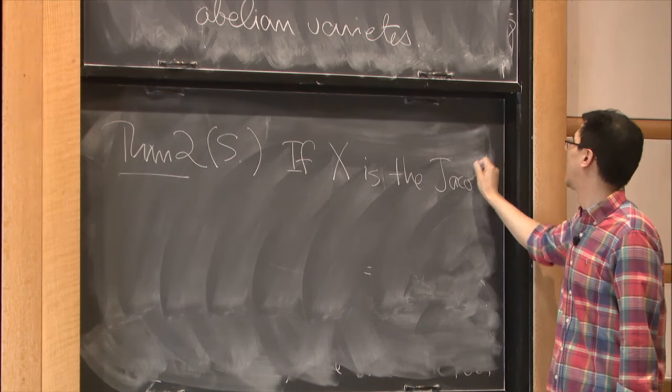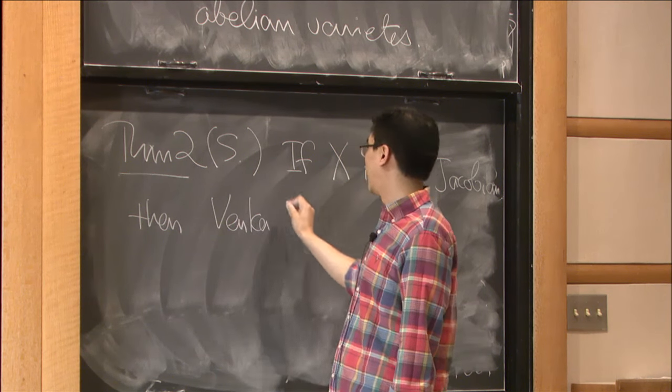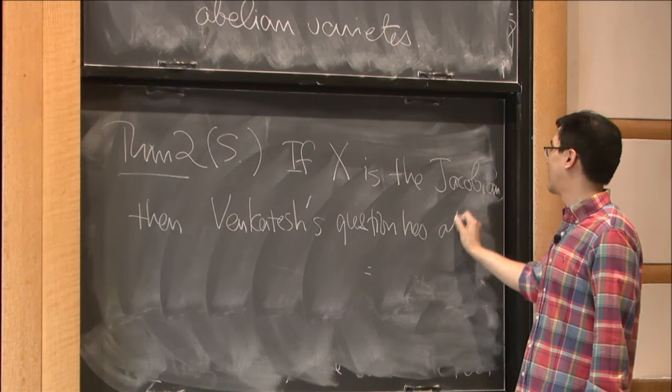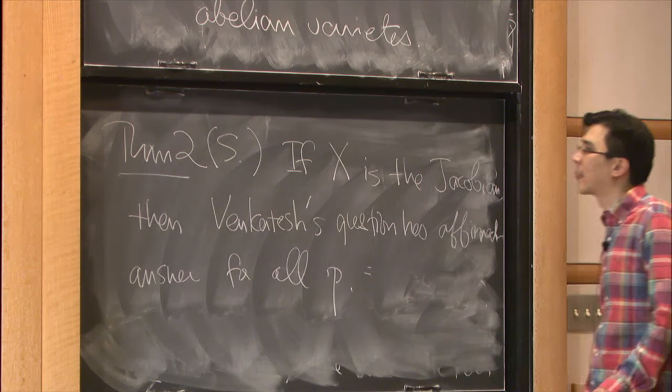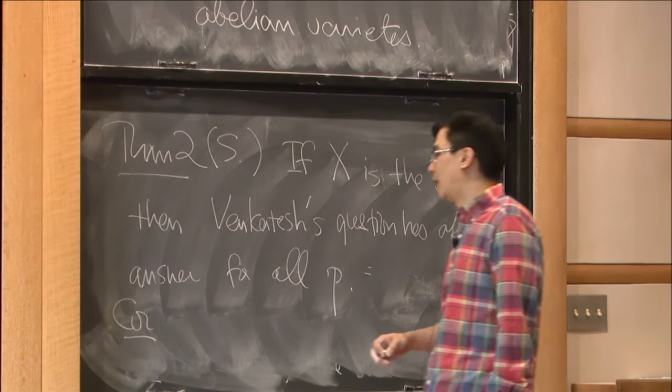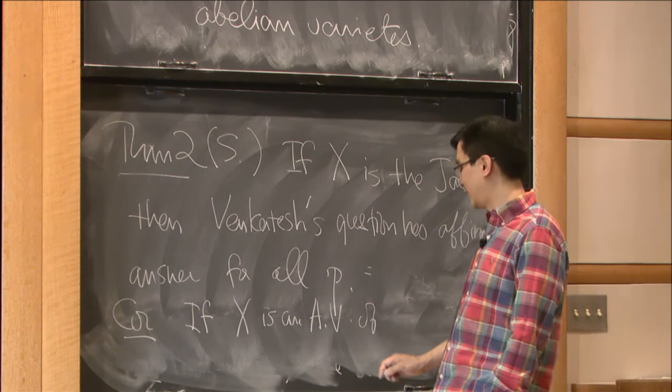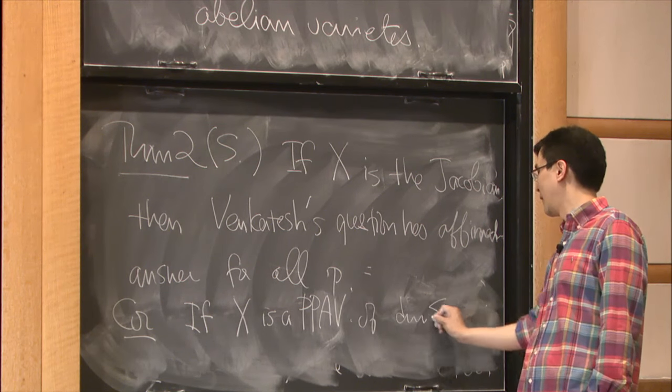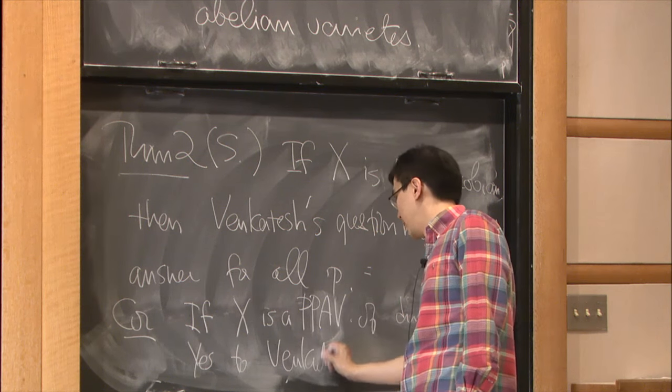Which was somewhat unexpected because it involves the so-called Schottky problem. So if X is a Jacobian of a curve, then actually this question, then ah, yes, right, question has affirmative answer for all prime number p. So as a corollary, if X is an abelian variety, principally polarized abelian variety of dimension at most three, then we have the affirmative answer, yes to Akshay's question.